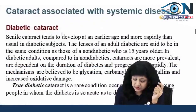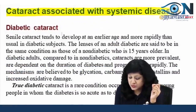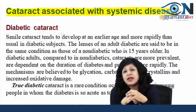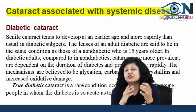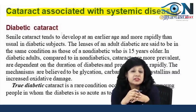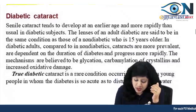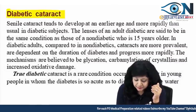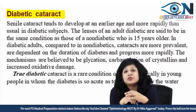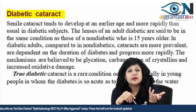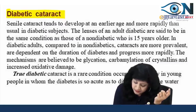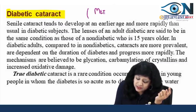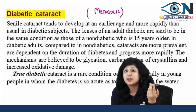Now we will shift towards cataracts associated with systemic diseases. Many systemic diseases are also related with cataract, not only ocular diseases. First, concentrate on diabetic cataract. All patients who have diabetes — this can be classified under metabolic diseases, so it is also a kind of metabolic cataract. Do not get confused when they say it is a metabolic cataract and also list it under systemic diseases, because diabetes is a metabolic systemic disease.